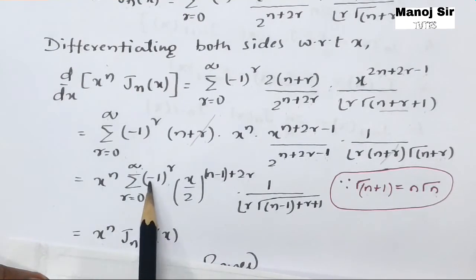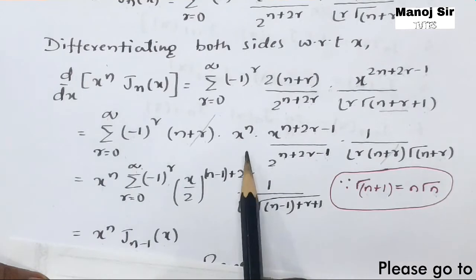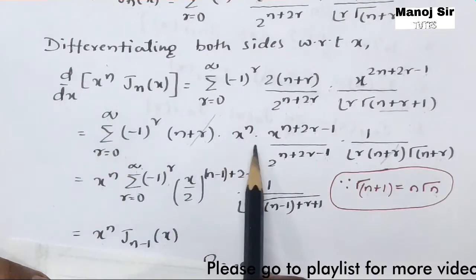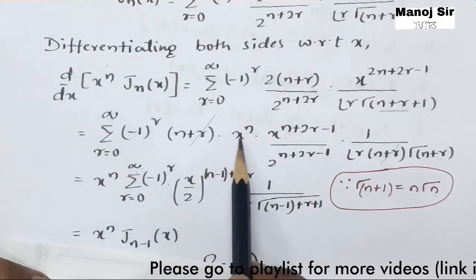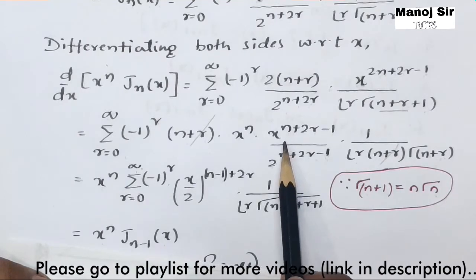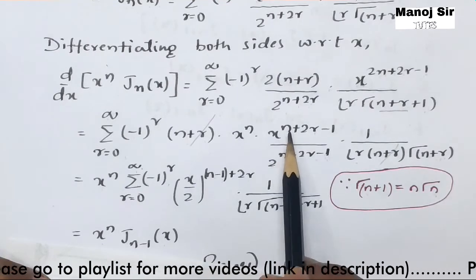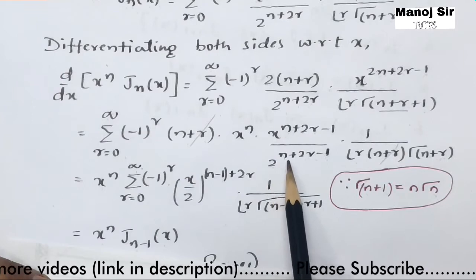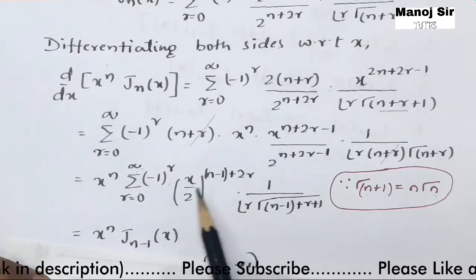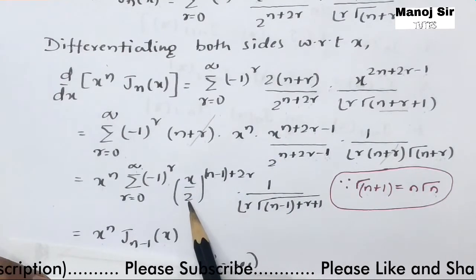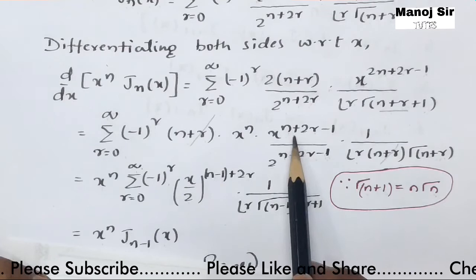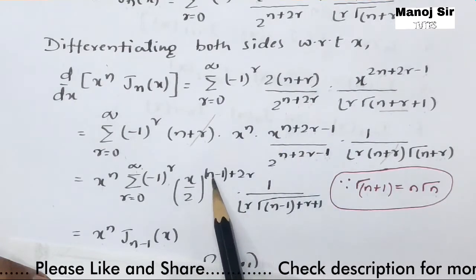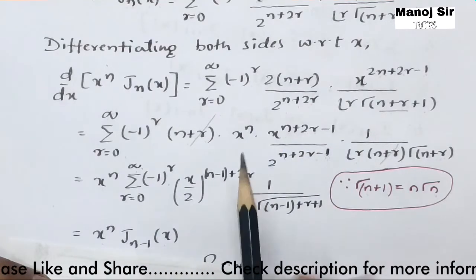With x^n factored out, the remaining summation contains x^{n+2r-1} in the numerator and 2^{n+2r-1} in the denominator. We can write this combined factor as (x/2)^{n+2r-1}, which can be rewritten as (x/2)^{(n-1)+2r}.